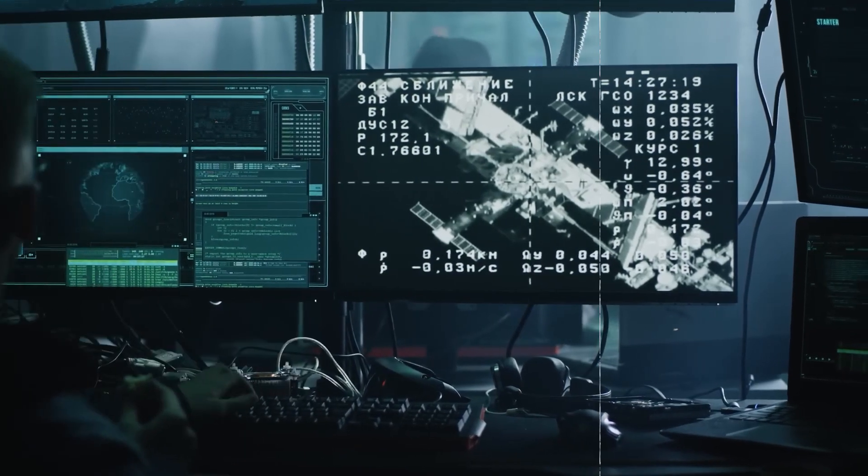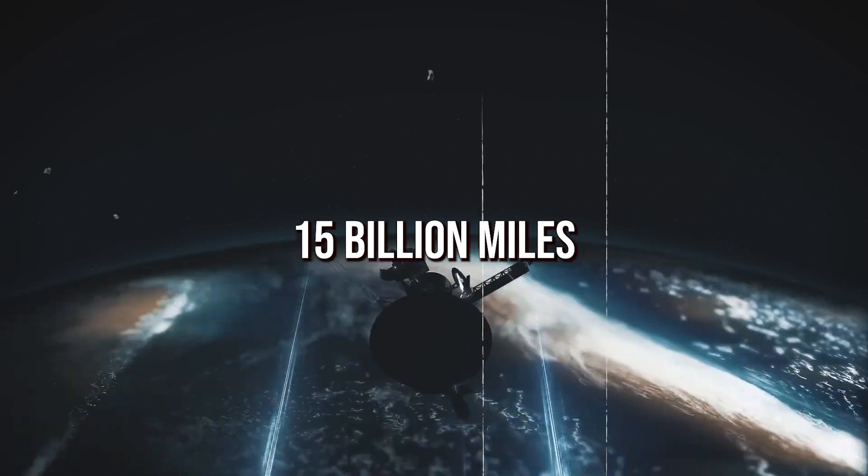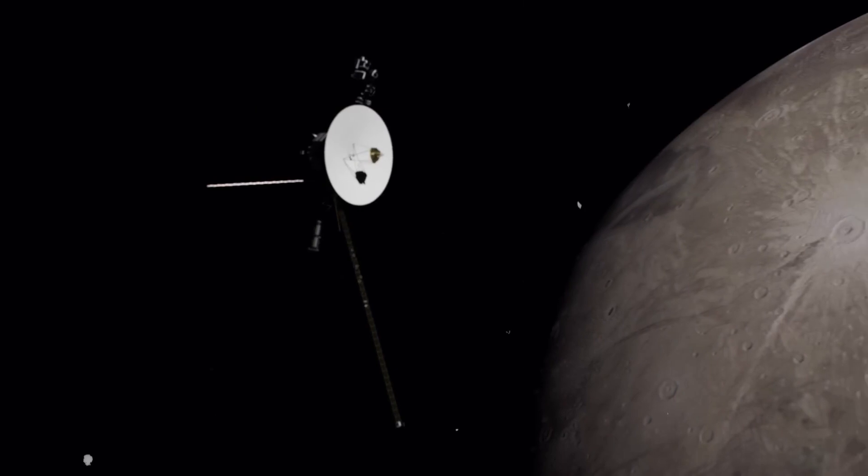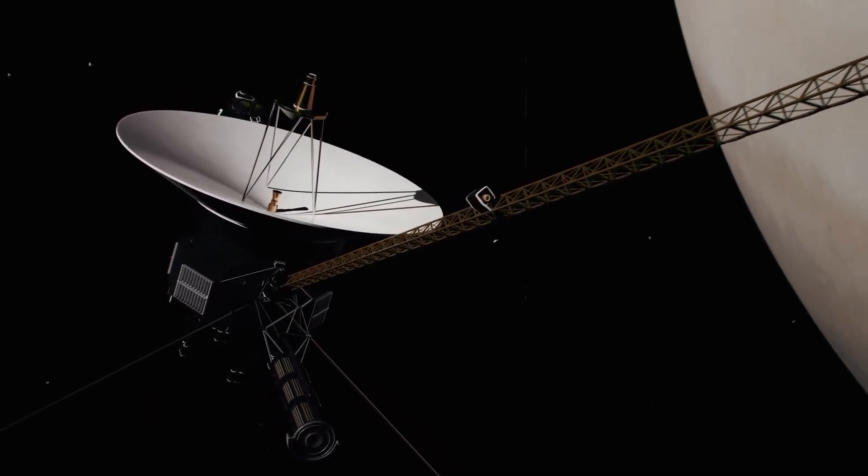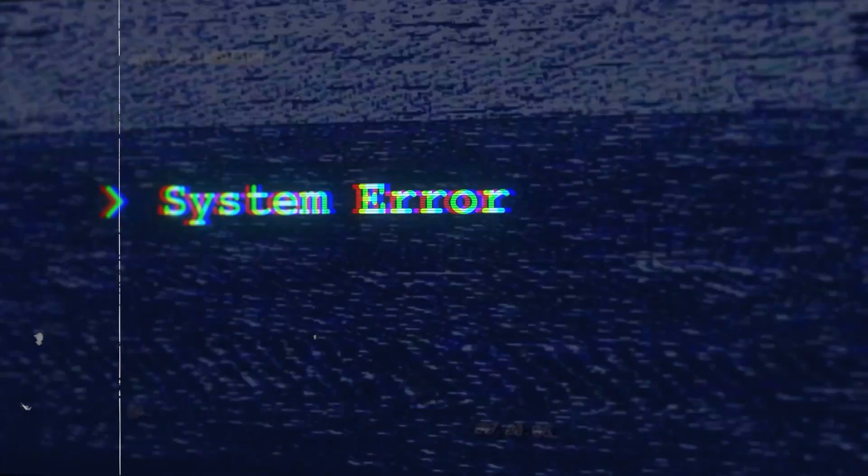Voyager 1, positioned 15 billion miles away, holds the record as humanity's most distant object in space. Over almost half a century of travel, the spacecraft encountered a glitch leading to perplexing communication issues over the past five months.